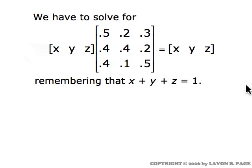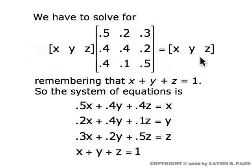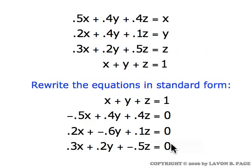The procedure for finding that is to set up this matrix equation and solve for x, y, and z, remembering they have to add up to one. The equations to solve are not as simple as in the frisbee example. When you multiply out the left side and equate it to the right side, you get: 0.5x plus 0.4y plus 0.4z equals x, and similarly the second and third equations. Combining terms and writing in standard form, you get equations with an x term, a y term, and a z term on the left, and just a number on the right.